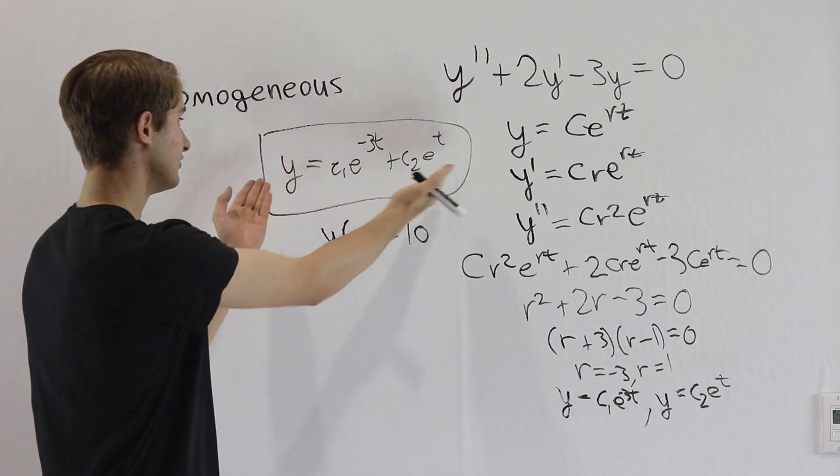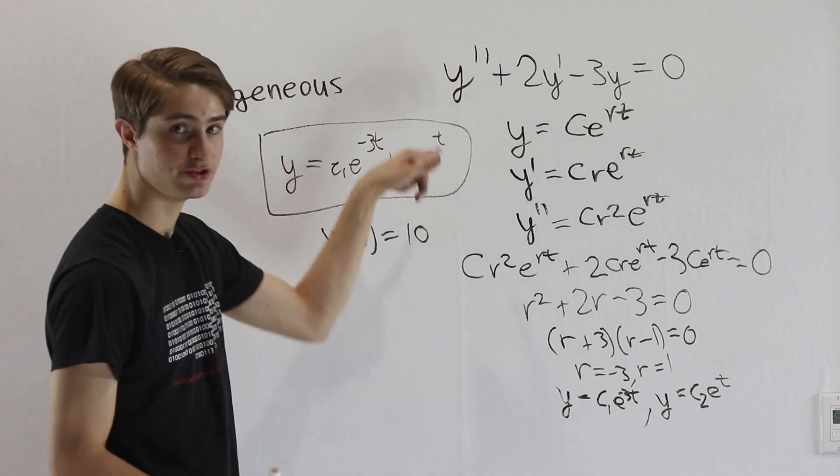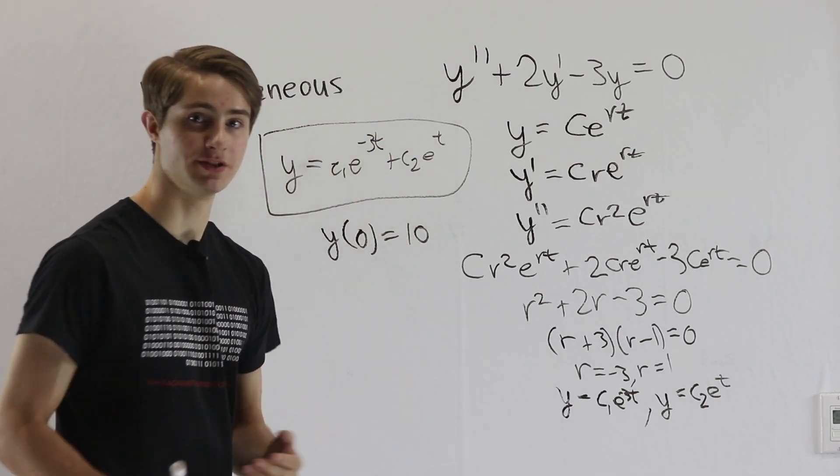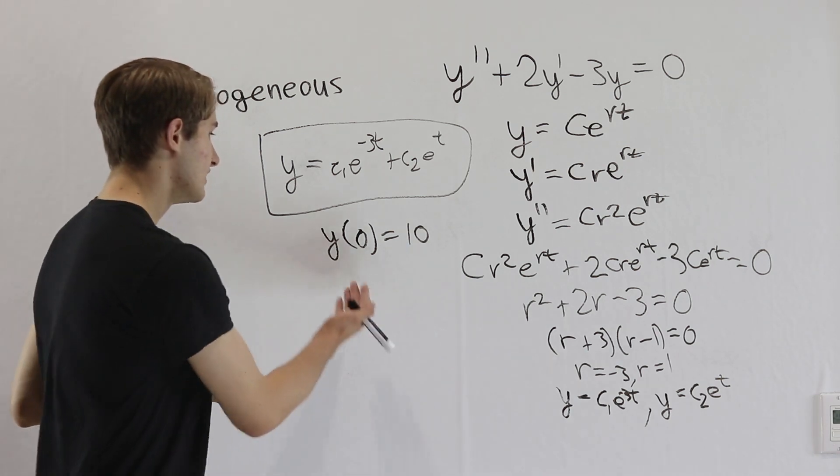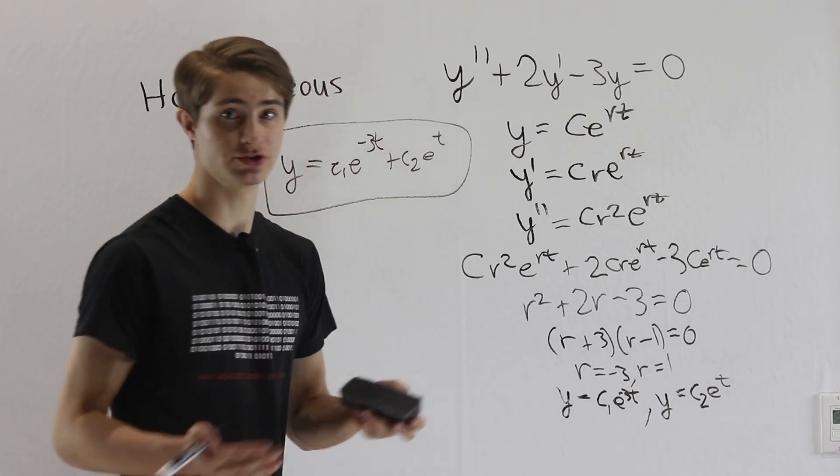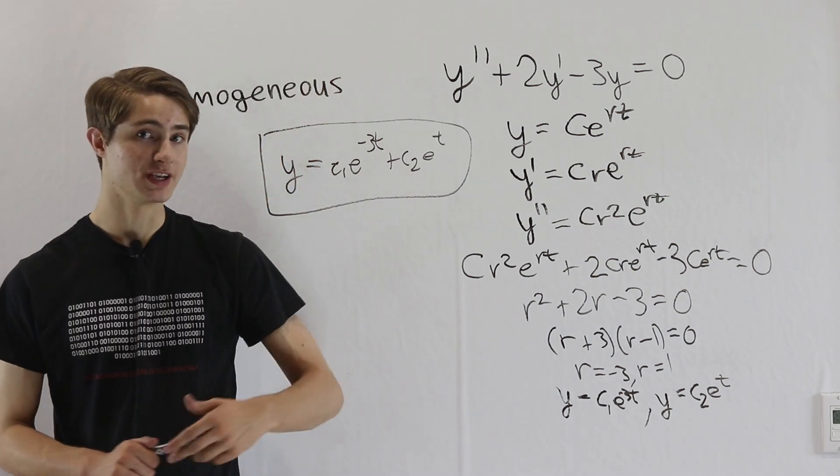And you could plug this into our function here, plug in 10 here and then e to the zero, e to the zero on both of these, and solve for what c1 and c2 would have to be in those cases. So these are called initial conditions, and those are ways that we can solve for particular solutions of the differential equation that solve for specific initial values.